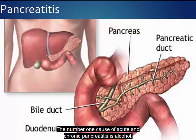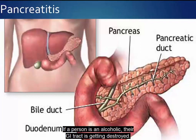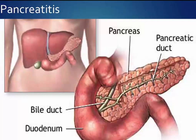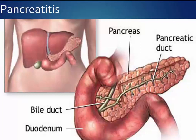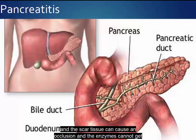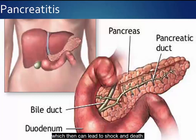The number one cause of acute and chronic pancreatitis is alcohol. Alcohol destroys the GI tract, causing scar tissue in the pancreas. The scar tissue can cause an occlusion so that enzymes cannot get out into the small intestine and back up into the pancreas. When this happens, necrosis of blood vessels can occur, leading to generalized hemorrhaging, which can then lead to shock and death.